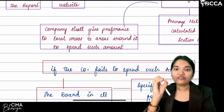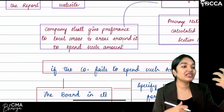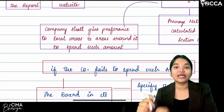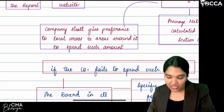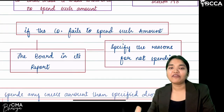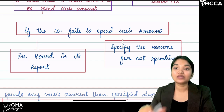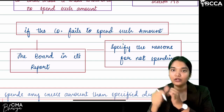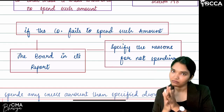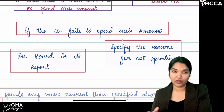When choosing CSR activities, the company should give preference to the development of society and the environment in local areas and areas around the company's location. If the company fails to spend the 2%, the board's report must disclose the reasons for not spending the 2% towards CSR.